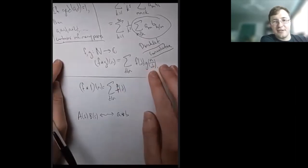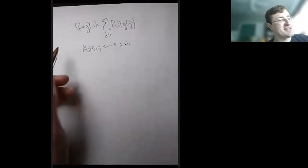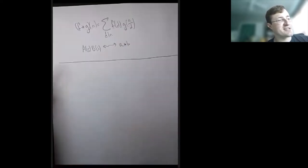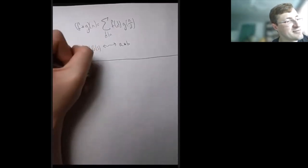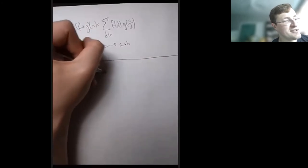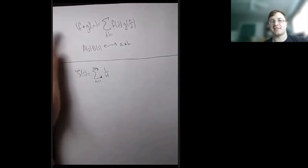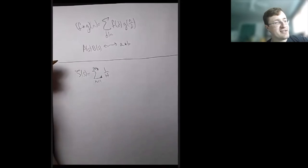So we've shown that multiplication of Dirichlet series corresponds to convolution of the coefficients. Now I want to look at the Riemann zeta function in particular. The Riemann zeta function is the sum of 1 over n to the s — so all coefficients are 1. Euler discovered that this can be written as an infinite product, and that depends on unique factorization of positive integers. If n equals p1^α1 * p2^α2 * ... * pk^αk, then I look at the term 1 over (p1^α1 * p2^α2 * ... * pk^αk)^s.